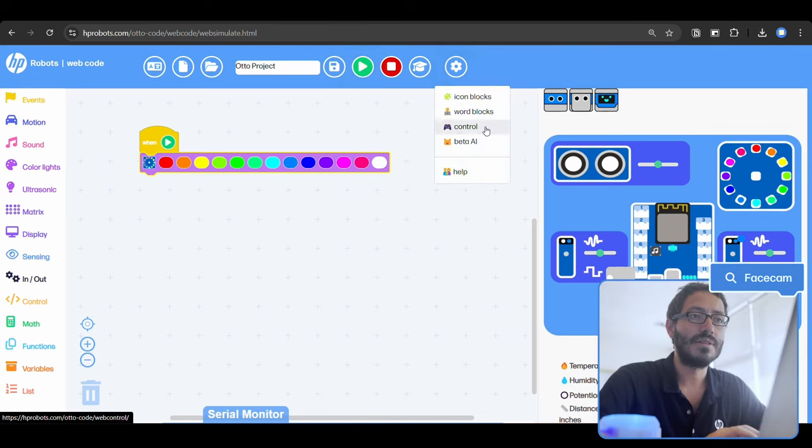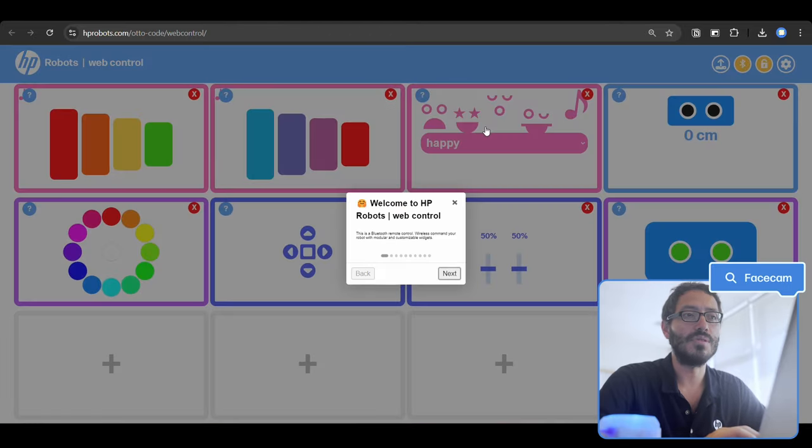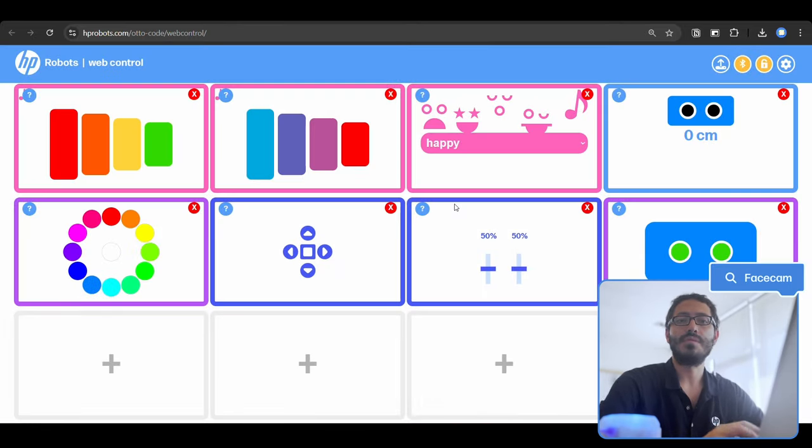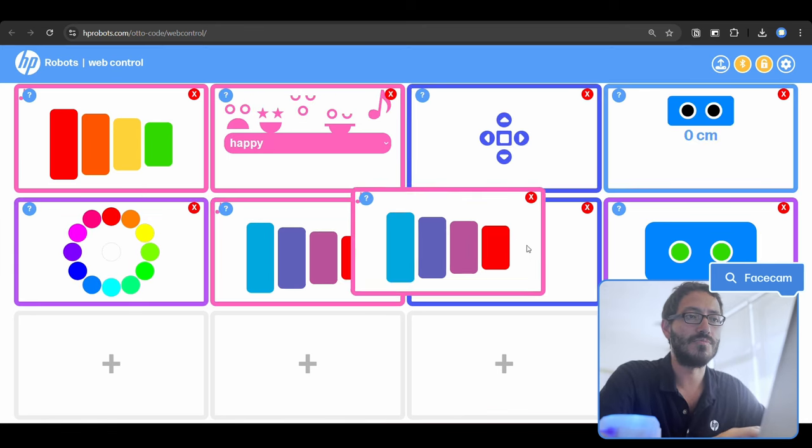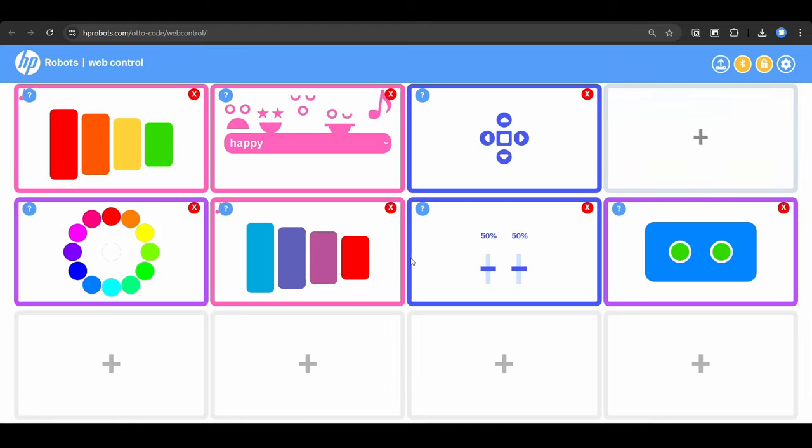We also have a web remote control that I can connect the robot via Bluetooth and control instantly with these widgets. These widgets can be rearranged. I can delete them. I can add new ones because it's also modular.